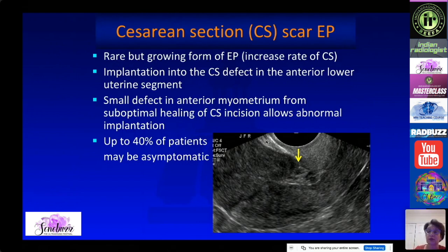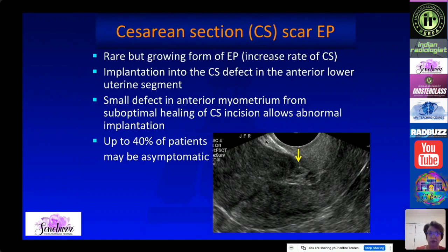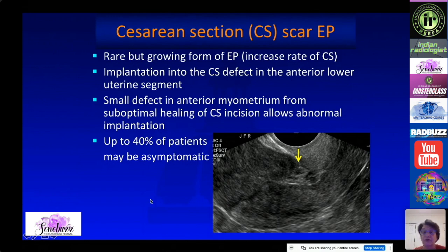Another ectopic implantation that is becoming increasingly common in the US due to rising c-section rates is cesarean scar implantation. While technically intrauterine, it is an abnormal implantation into the defect in the lower uterine segment from a prior cesarean section. Some of these patients are completely asymptomatic, so you may be the first to make this diagnosis.